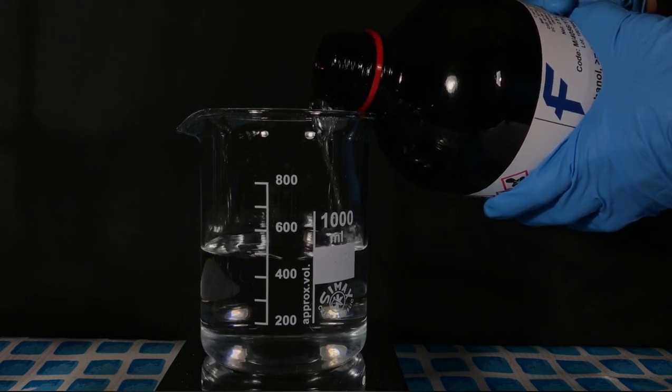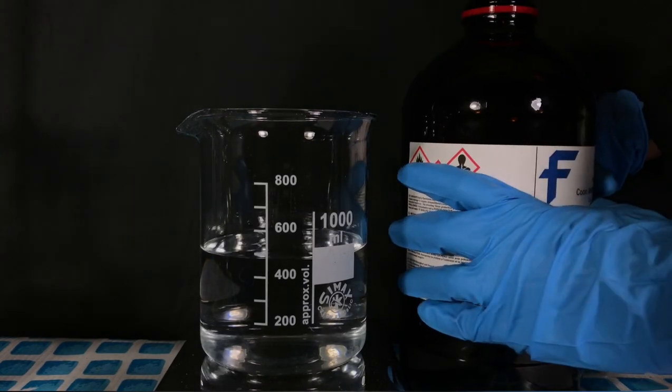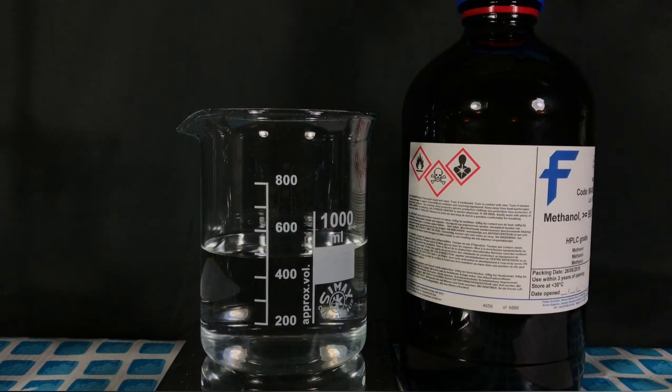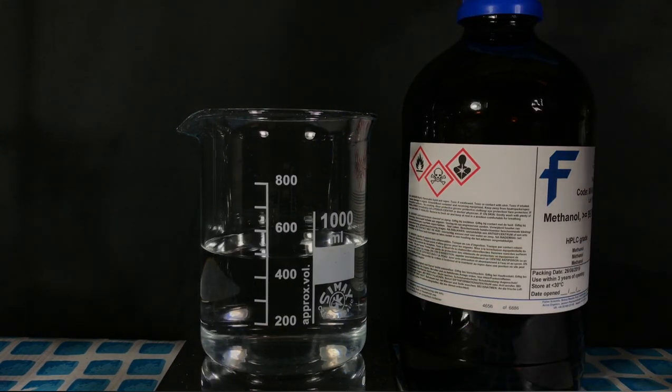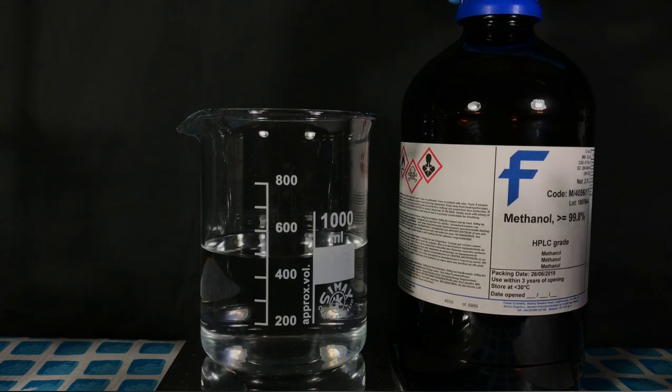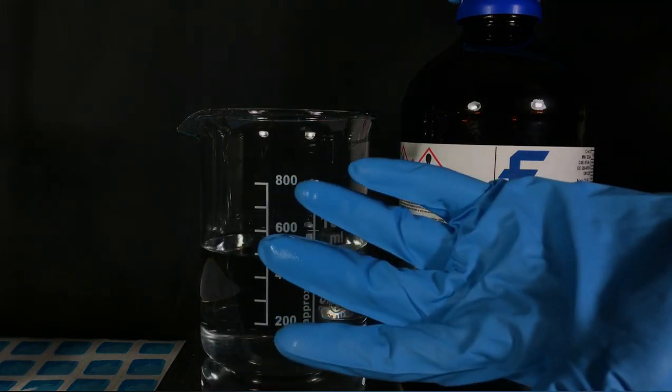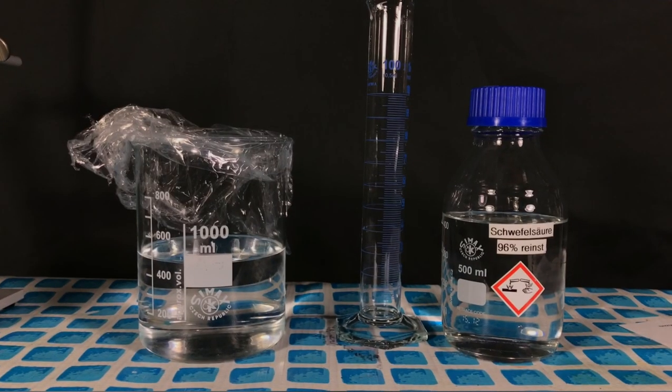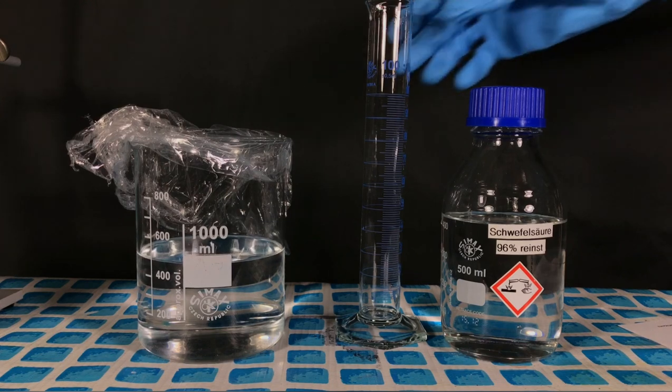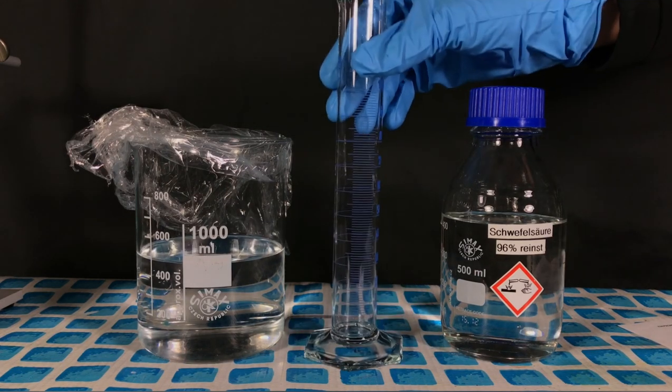If methanol got into your body it would first be metabolized to formaldehyde and later on to formic acid. You don't want any of those chemicals in your body, and this is the reason why you wear gloves. I actually spilled some methanol onto my glove which would otherwise have ended up on my hand.